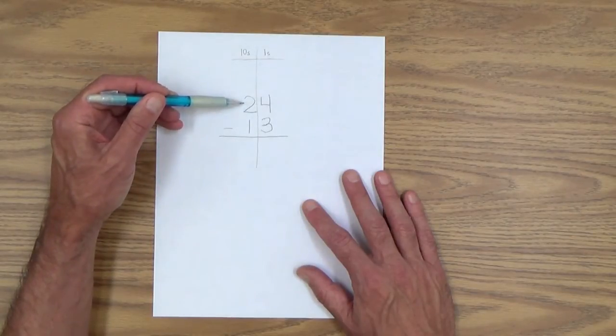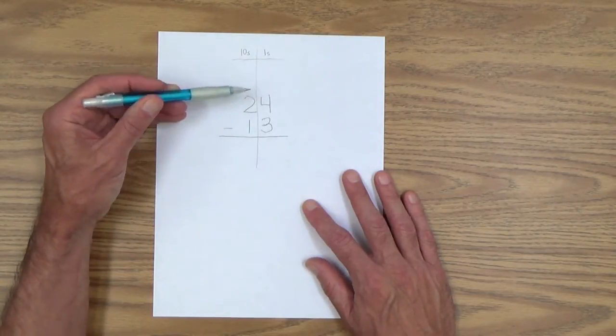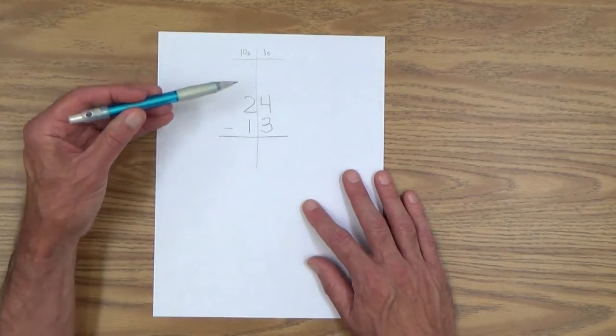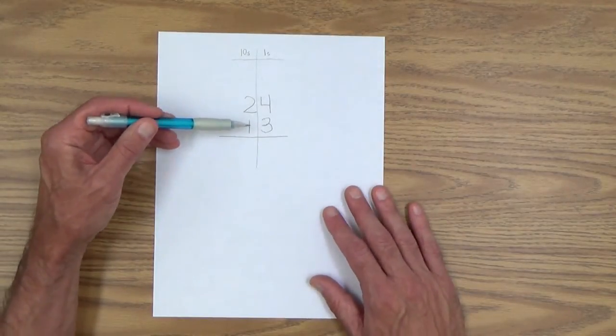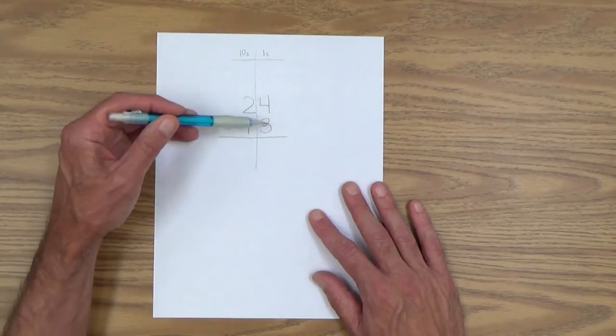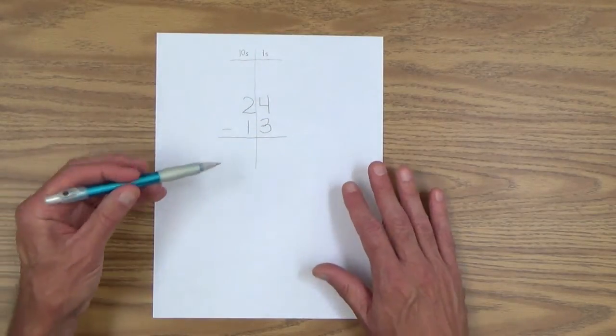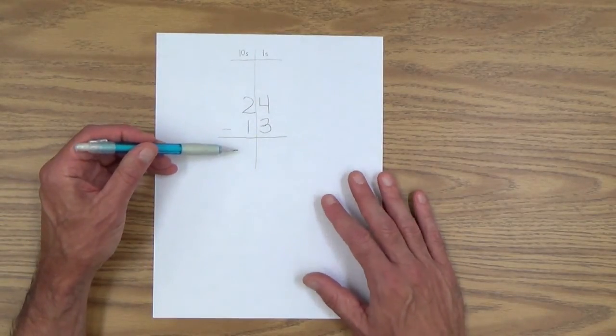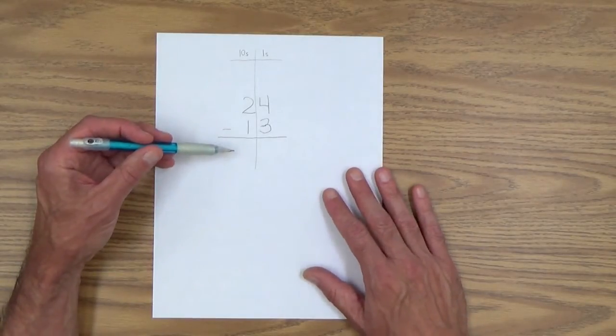And you and I both know that 24 is two tens and four ones. Or you might say two bundles of craft sticks and four ones, whatever, however you want to say that. And of course, the number thirteen is one ten and three ones. So it's very important to establish that first before anything else.